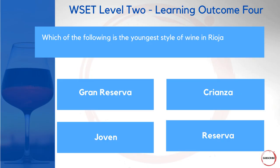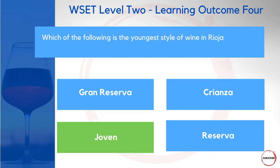When we looked at the Tempranillo slide, we discussed barrel aging and bottle aging. Which of the following is the youngest style of wine in Rioja? Would it be Gran Reserva, Crianza, Joven, or Reserva? Coming into an exam with a question about aging requirements is always tricky, but the clue here is that Joven in Spanish means 'young' — a pretty good indicator that this is the youngest style.